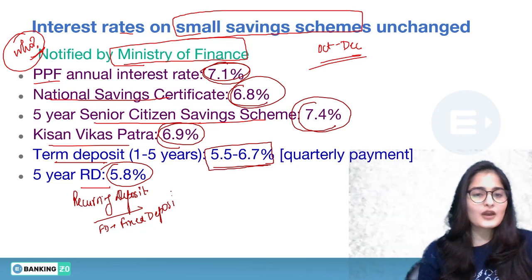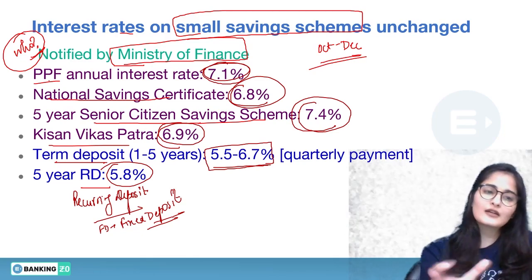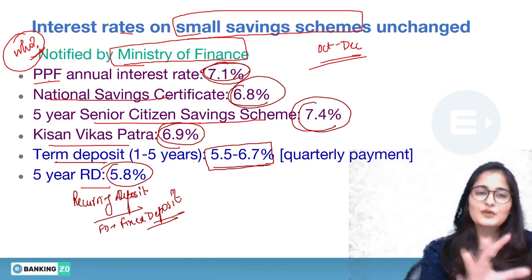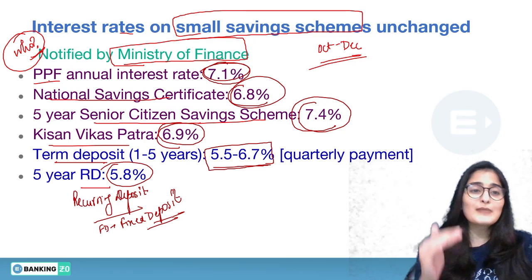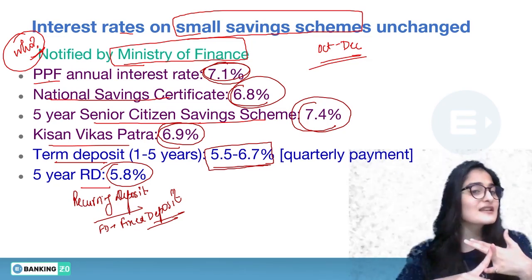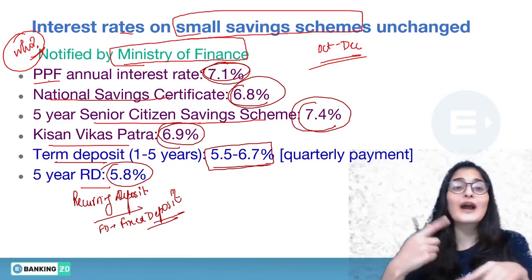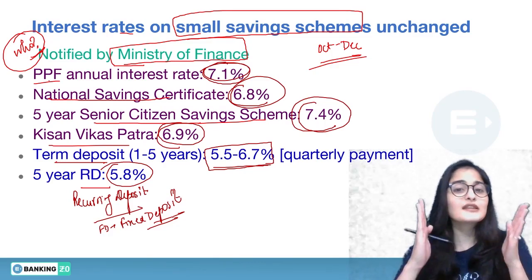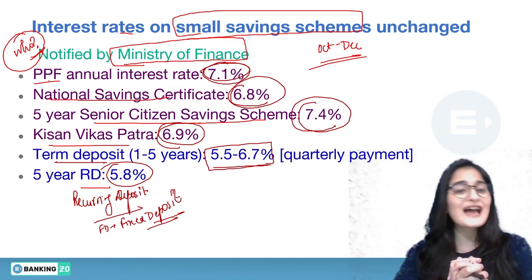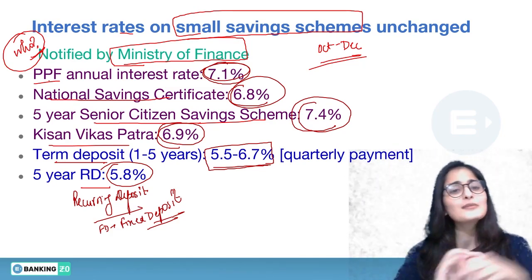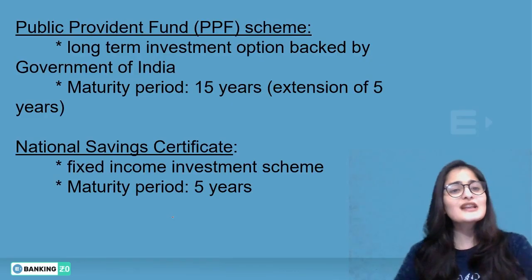If you are not aware about fixed deposits and recurring deposits, there is a separate video on types of bank accounts explaining RD and FD. The remaining four — PPF, National Savings Certificate, Senior Citizens Saving Scheme, and Kisan Vikas Patra — are quite in the news now. Since this event has come up, we'll look at what these schemes are, as certain statement-based questions may be posed about them.